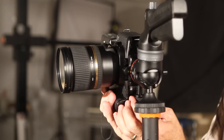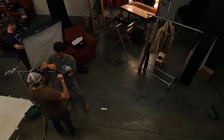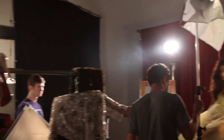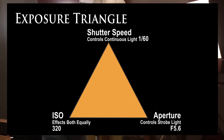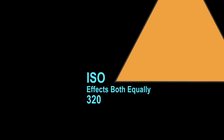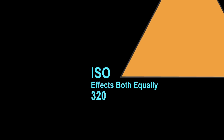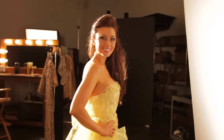The continuous light sources will be used in conjunction with smoke to create an interesting look. Our camera settings are going to be critical when using these two light sources together, as they can be very different in power and color. Let's look at the exposure triangle to understand how they work together. I'm going to set the ISO to 320 — a stop brighter than I usually use — to help the continuous light source register. ISO changes both shutter speed and aperture equally, so it controls both the continuous and strobe light equally.